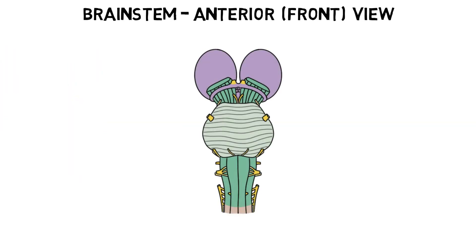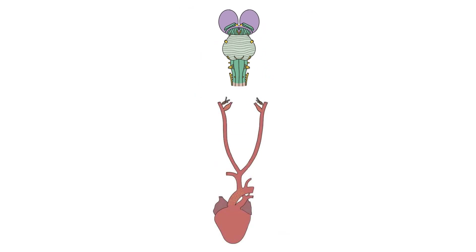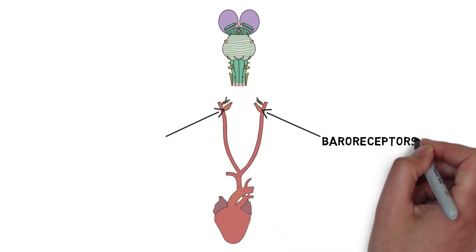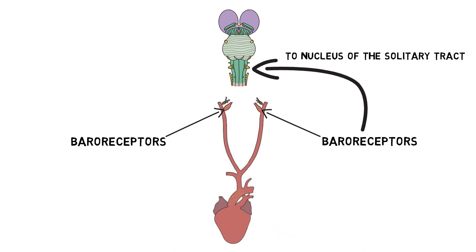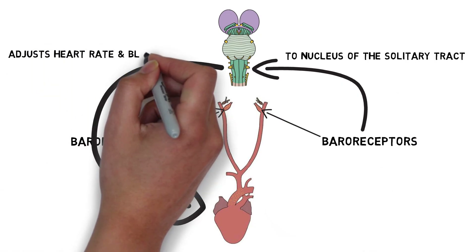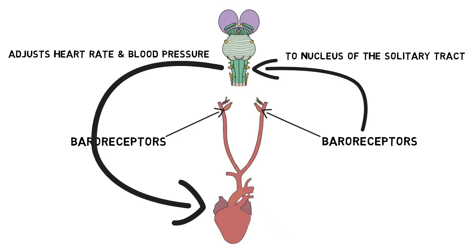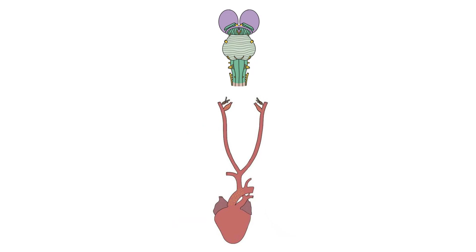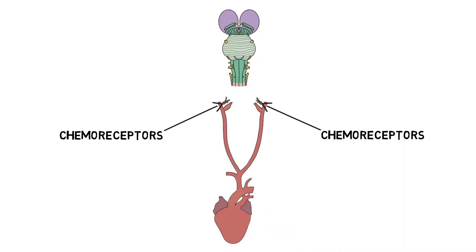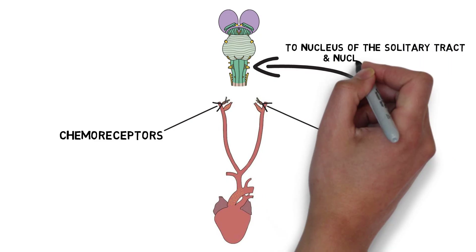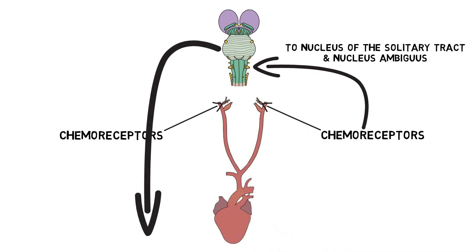Perhaps the most important action linked to the medulla is the regulation of cardiovascular and respiratory functions. The medulla gets information about changes in blood pressure from baroreceptors, which are found inside blood vessels. This information is sent to the nucleus of the solitary tract in the medulla, which initiates reflexive actions to return blood pressure to a desired range. The medulla is also responsible for generating breathing movements and regulating respiration. Chemoreceptors inside blood vessels detect changes in oxygen and carbon dioxide levels in the blood, and when oxygen levels fall, neurons in and around the nucleus of the solitary tract and the nucleus ambiguus respond by increasing respiration.